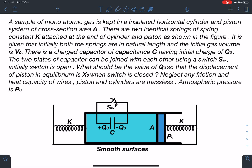There is a charged capacitor of capacitance C having initial charge of Q0. The two plates of capacitor can be joined with each other using a switch. Initially switch is open. What should be the value of Q0 so that the displacement of piston in equilibrium is x0 when switch is closed?